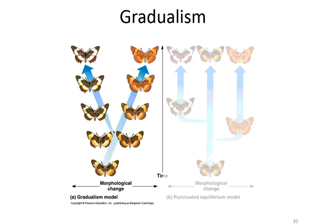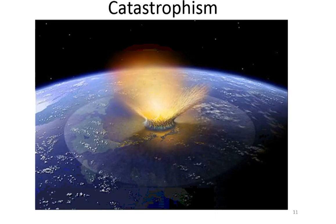Another idea is called catastrophism — think of the word catastrophe. This is the idea that changes occur very rapidly due to some sort of large-scale extinction event, like an asteroid or global flood. This doesn't require massive amounts of time.